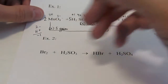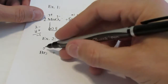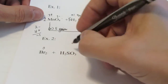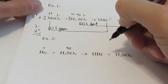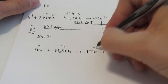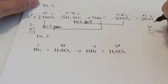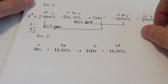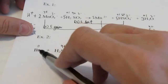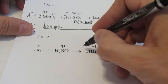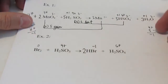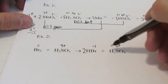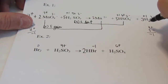Step one: assign oxidation numbers. Zero for bromine — it's in its elemental state. Sulfur is 4⁺ on this side. On the other side, bromine is −1 and sulfur is 6⁺. I'm picking out the atoms that changed oxidation numbers quickly. Step 1A: I have to do it this time because bromine changed. I have two on this side and only one over here, so I'll put a two there. Now I have two bromines on both sides and one sulfur on both sides. Steps one and 1A are finished.